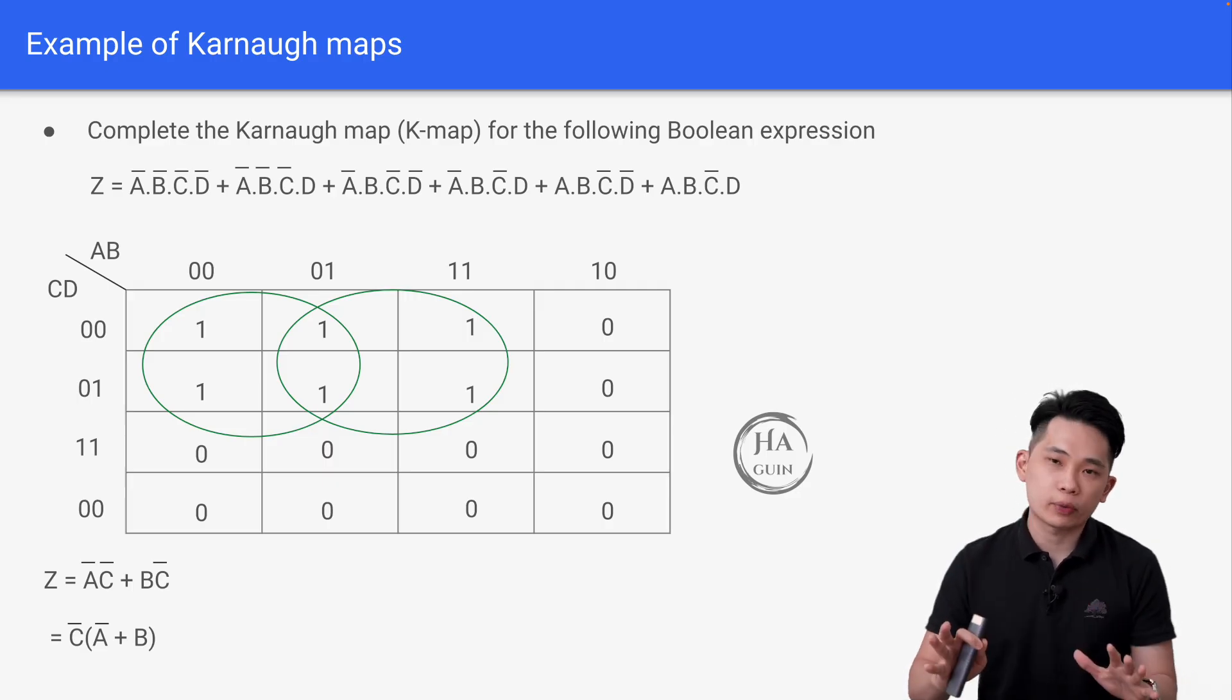So the final expression will be Z equals not C bracket not A plus B. So this is how we can answer typical Karnaugh maps questions.